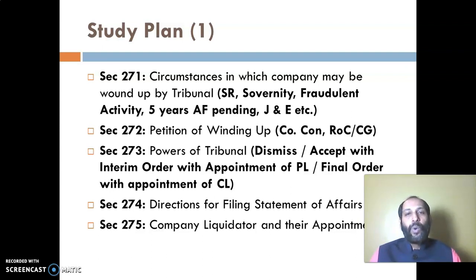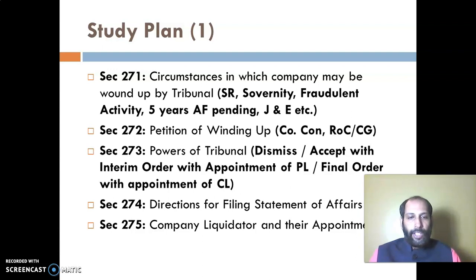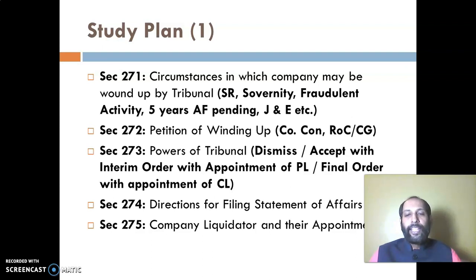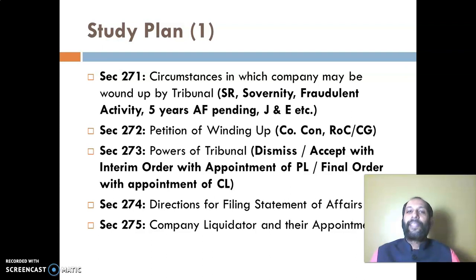Section 272 speaks about who can file a petition for winding up: the company can file a petition, the contributory can file a petition, the government can file a petition, and the ROC or Central Government. Note that creditors filing a petition is now part of IBC. Section 273 speaks about the powers of the tribunal when a petition is filed: it may dismiss the application, accept the application, issue an interim order, appoint a provisional liquidator, or issue a final order by appointing a company liquidator. Section 274 speaks about filing of statement of affairs, and Section 275 speaks about company liquidator and their appointment. The most important sections to study are 271 and 272.